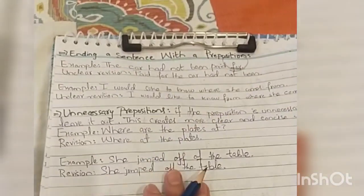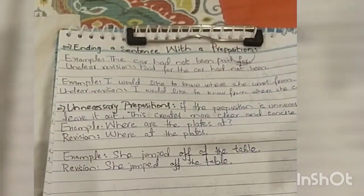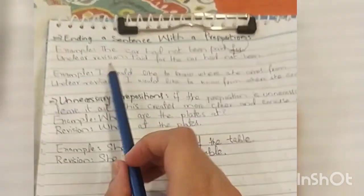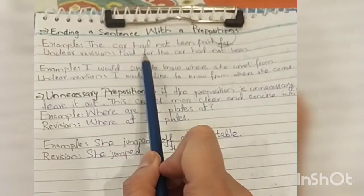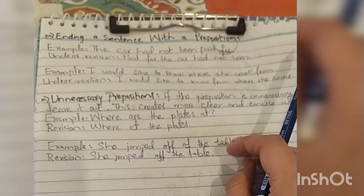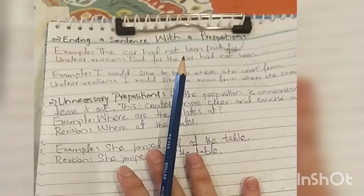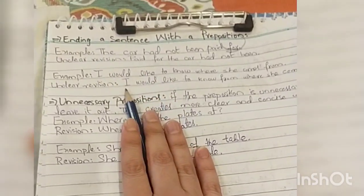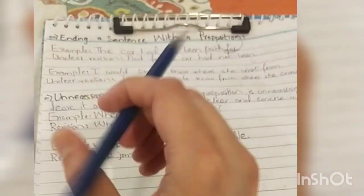It doesn't create any confusions in your mind. If this was the unclear revision according to the Latin rule, the sentence would be: for the car had not been paid. Does it make sense? Definitely not. It creates more confusion.